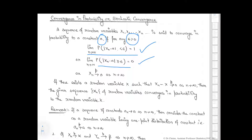We can also say that if there exists a random variable x such that x_n minus x tends to 0 in probability as n tends to infinity, then the sequence x_n of random variables converges in probability to the random variable x.